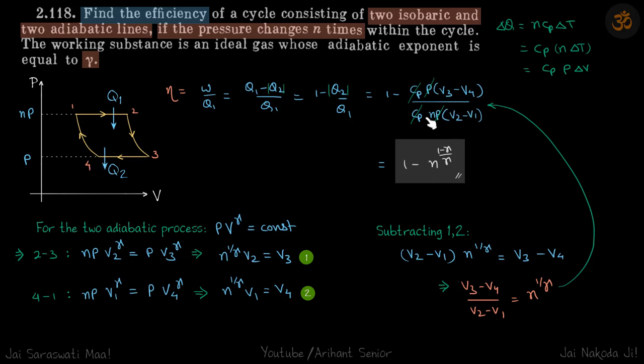Because we need this ratio, let's take the root of gamma both sides in both the equations. So we get n to the power 1 by gamma times V2 is equal to V3, and n to the power 1 by gamma times V1 is equal to V4.